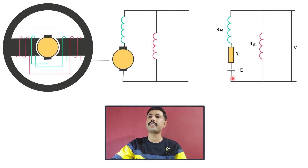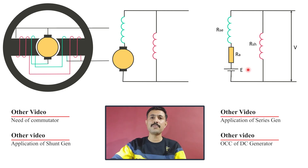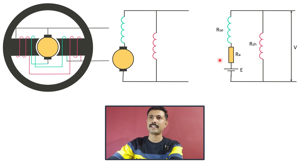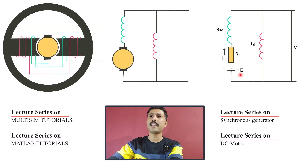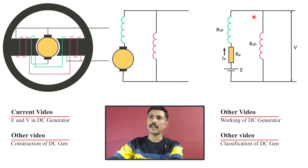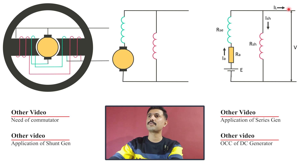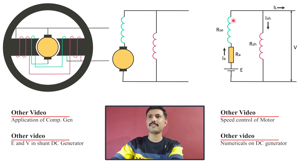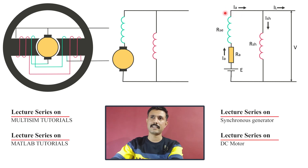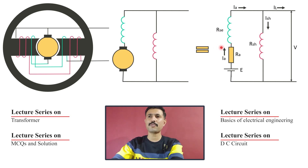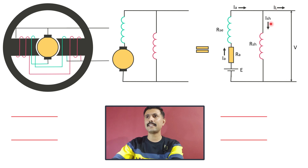If we subtract the voltage drop across RA and RSE from the induced EMF and add the terminal voltage with those drops, we can find the induced EMF. For that, we need to find the armature current flowing through the circuit. Because of induced EMF E, we have armature current IA. This armature current flows through the armature winding as well as the series field winding. At the junction, the armature current splits: one part goes to the shunt field winding (ISH) and the other goes to the load (IL). The current flowing through the armature and series field winding is IA.